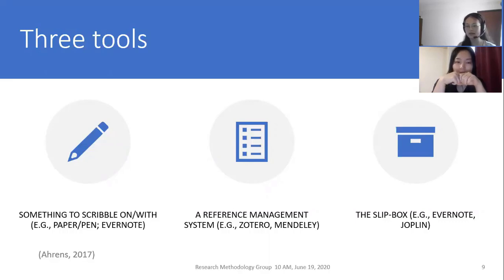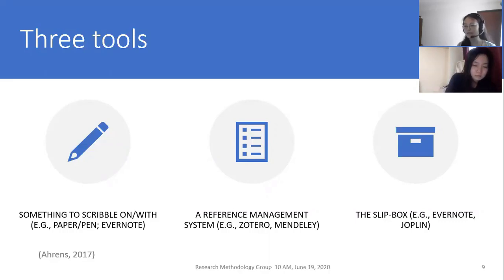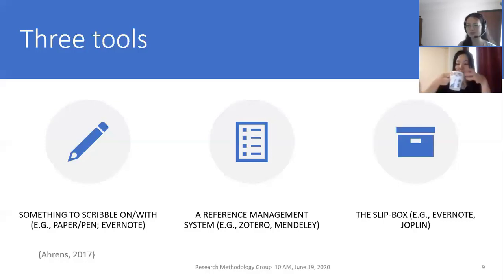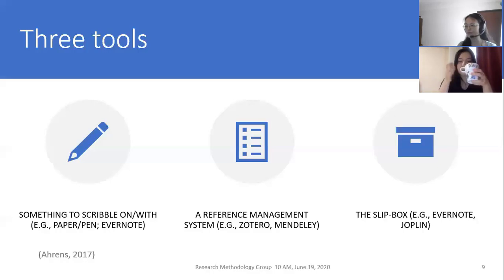I use Evernote because I have it on my computer and my mobile phone, and the mobile phone is always with me, so I can capture ideas with the Evernote app on the phone. The second tool is a reference management system — it can be Zotero, Mendeley, or other reference managers — because very often we need to organize our references carefully so that when we write we can access them fast, and we can also use it as a library to browse what to read. I use Zotero, but you can choose the one you feel most convenient with.